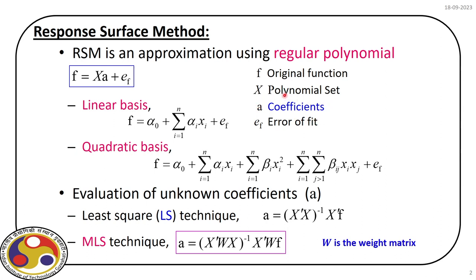The basis of the polynomial can be linear or quadratic depending upon the choice we have. In the first example we have a linear basis, and the second is a quadratic basis with cross terms; sometimes we neglect cross terms to make the modeling simple. Quadratic basis gives a better approximation of the limit state and is helpful to evaluate curvature, allowing us to solve second-order reliability problems using this model.